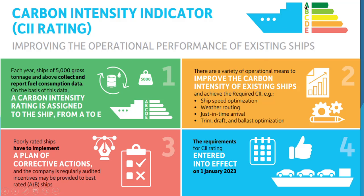Based on their CO2 emissions, ships will be given a category from A to E. A, B, and C are normal — compliant categories. D and E are not normal. If your ship falls in category D or E you have to take corrective action, while ships in category A or B will receive an incentive.